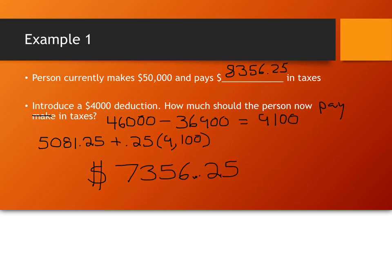And you end up with $7,356.25 in taxes. So, notice something. First off, this was, we were in the 25% tax bracket. That's important. 25% tax bracket. A $4,000 deduction meant, essentially, you paid $1,000 less in taxes. Now, why is it $1,000? Again, this has to do with, we're in the 25% tax bracket. 25% of $4,000 is $1,000. So, that's sort of why we went down by $1,000.